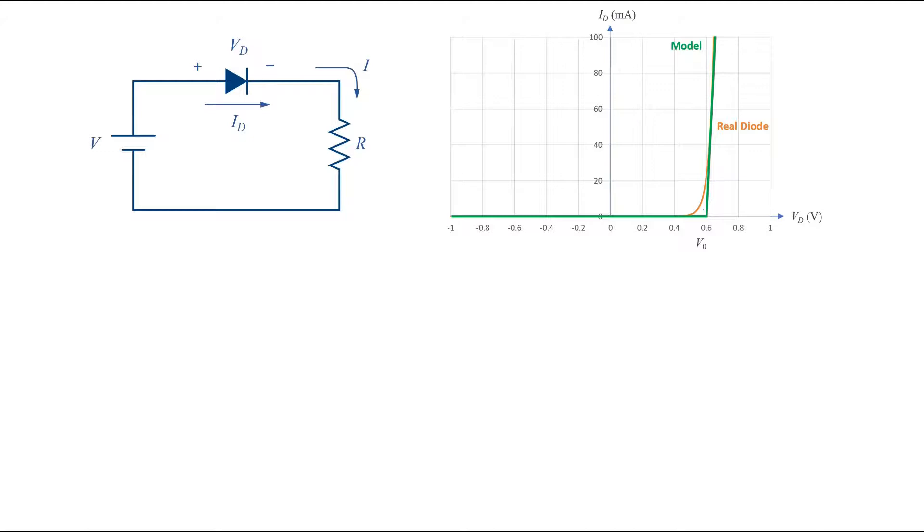If you want to describe this model by equations, when the voltage is less than the voltage shown here as V0, the current can be approximated to zero. The diode is said to be in off condition and can be modeled as an open circuit.